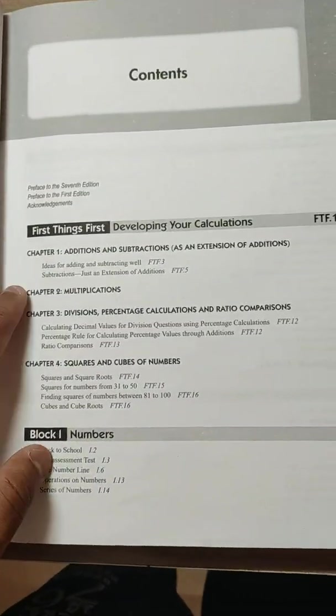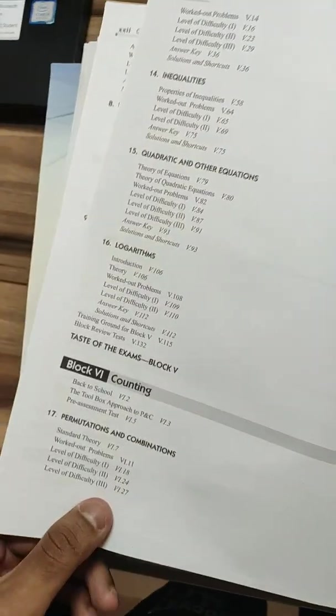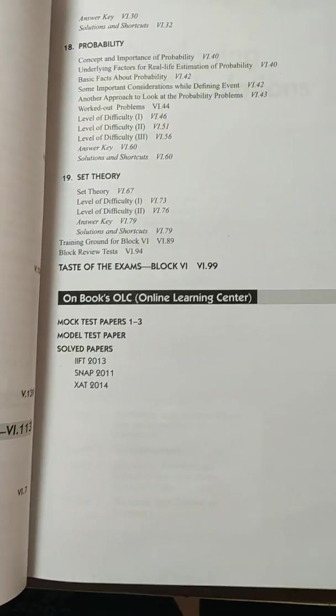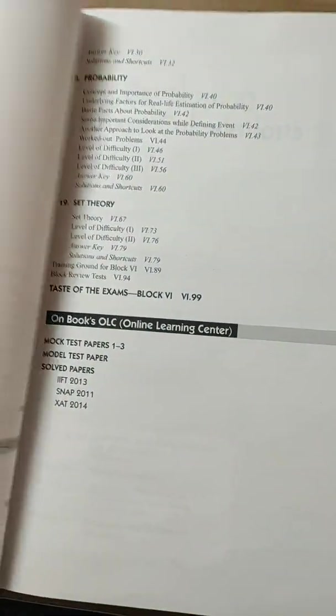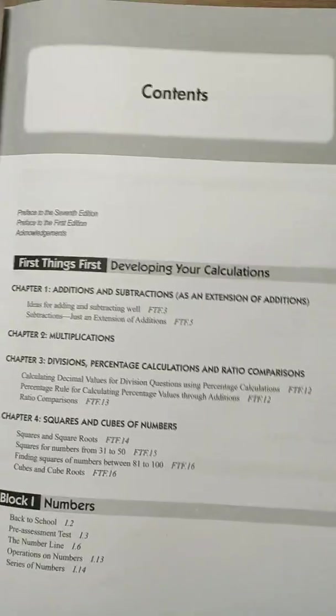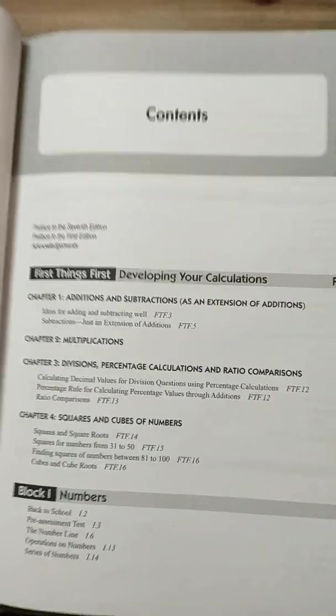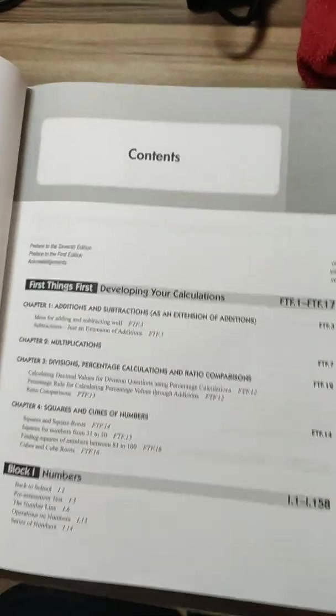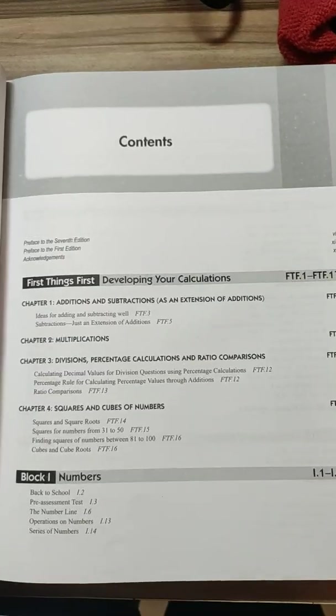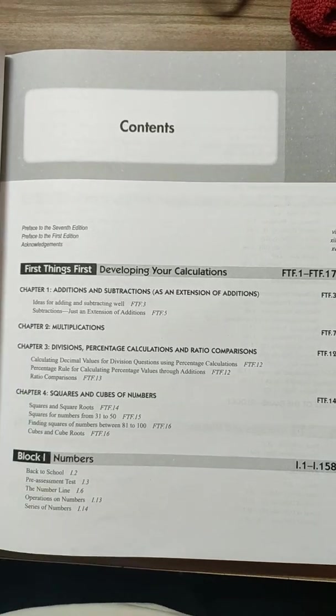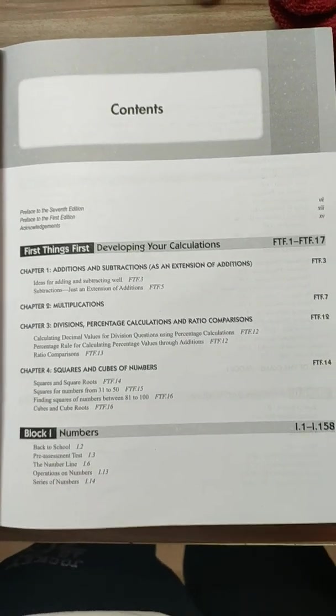In this we have actually five to six blocks, and the last block is online learning with mock tests and solved papers. First is First Things First. In this, the author is telling you about basic tricks—how to do addition, multiplication, division fast—which will be very helpful for you to solve problems in this book as well as learning and getting good marks in CAT.